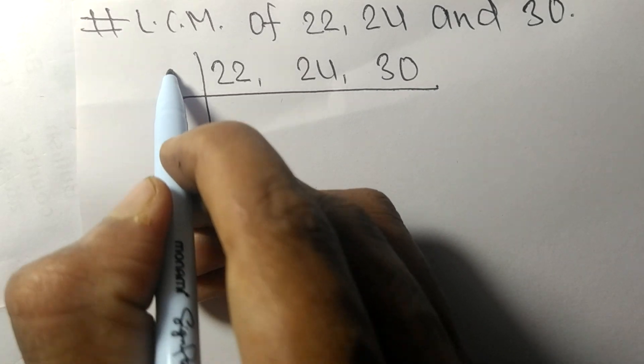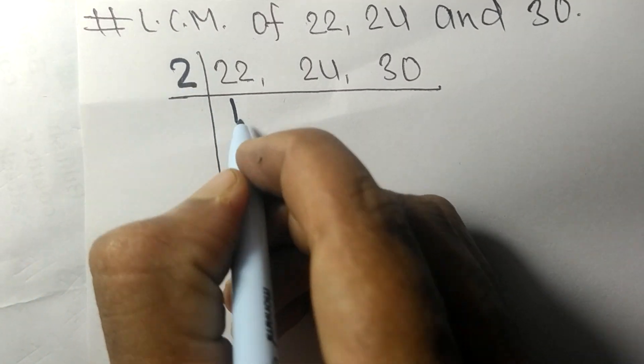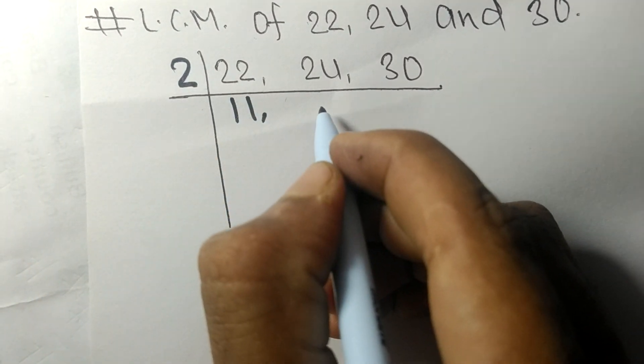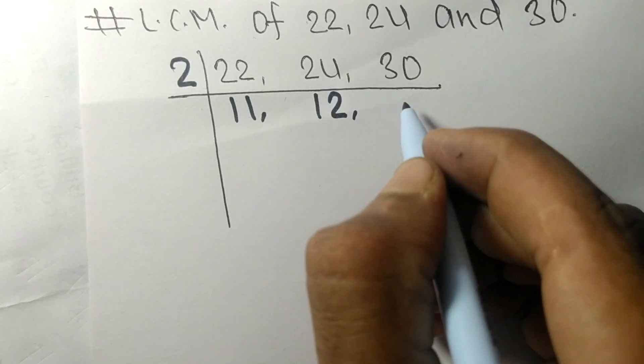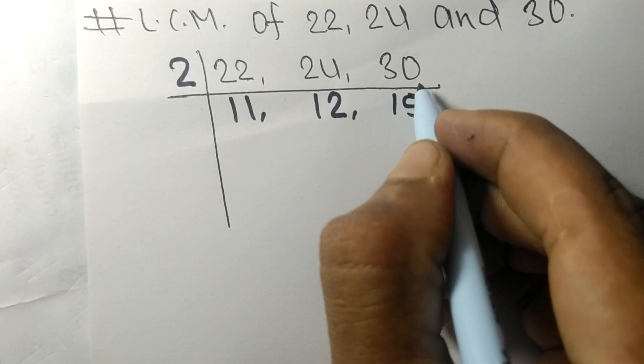2 times 11 means 22, 2 times 12 means 24, 2 times 15 means 30.